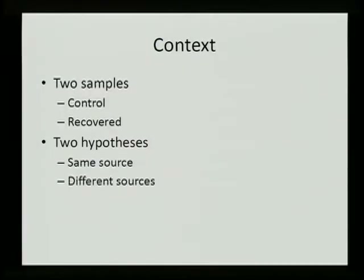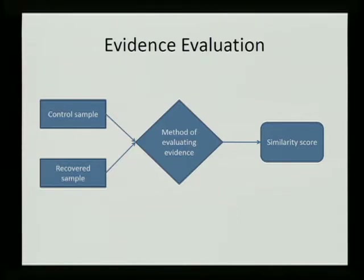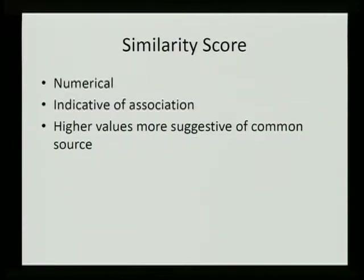Here is the forensics context. Let's suppose that we have two samples of observations — we'll call one the control and the other the recovered. We can form two hypotheses: the first is that the two samples originated from the same source, and the second is that they originated from different sources. The methods of evaluating evidence all take as input both samples and output a similarity score — a numerical value indicating the degree of association between the two samples. We assume that higher values are more indicative of a common source.